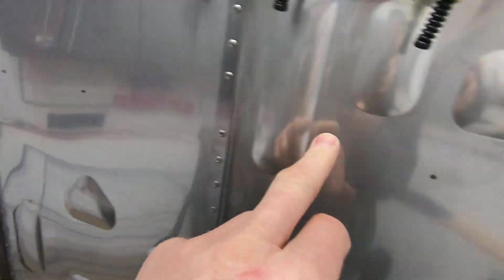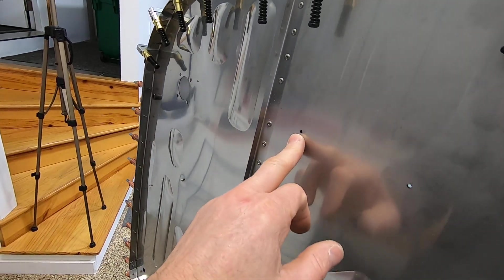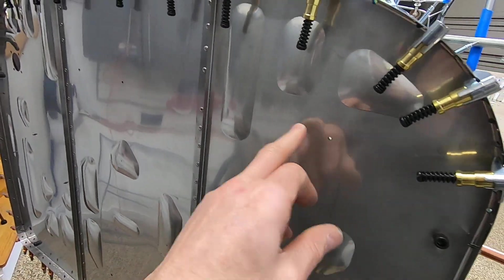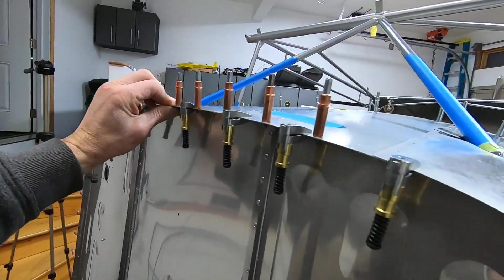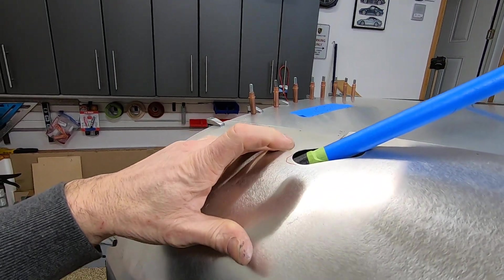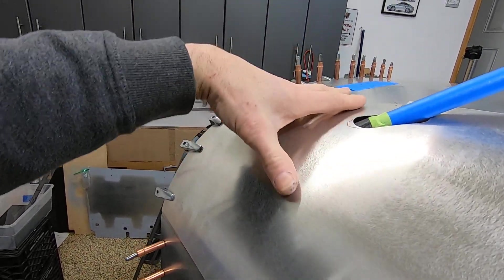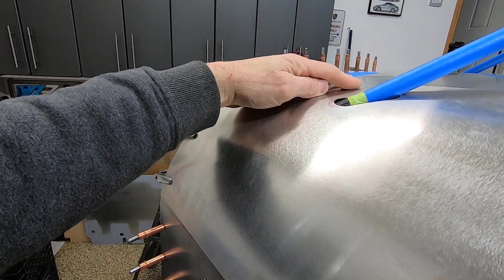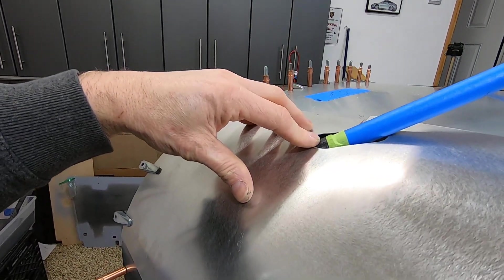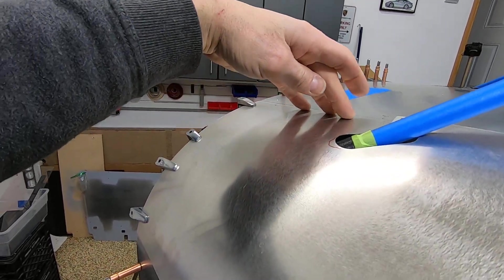I actually started putting in these rivets, sorry, Clecos. I'm running low on 40s so I just upsized them to 30s. This sits the way it sits and it's as good as it's going to get. I do have, I think I mentioned, this line is an inch and a half down from the edge.